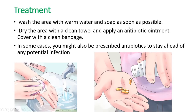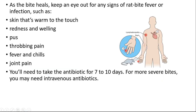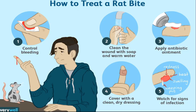First, wash your hands with warm water and soap, then dry. Use some antibiotics. Here is a total overview of this treatment: first, stop bleeding; second, clean your hands with warm water and soap; third, apply some antibiotic ointment; fourth, cover with a clean dry bandage or dressing; fifth, watch for signs of infection.